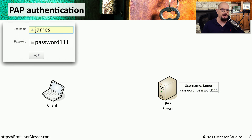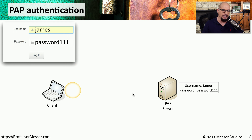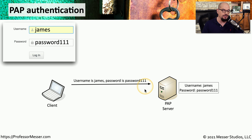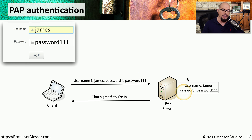Here's how this simple Password Authentication Protocol works. We have a username of James and a password of password111, with a client and a server. The client sends a request to the server saying the username is James and the password is password111, sent in the clear using PAP. The PAP server authenticates the username and password and sends a message back to the client saying the credentials check out and the user is now allowed access to the network.